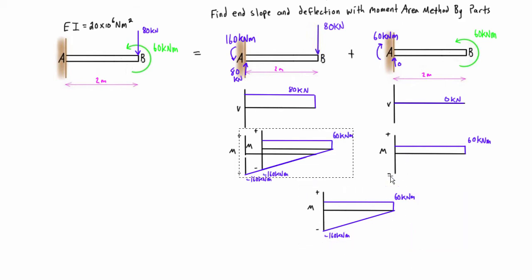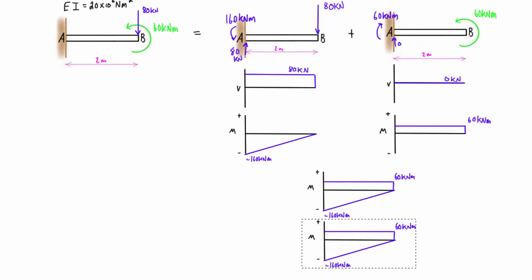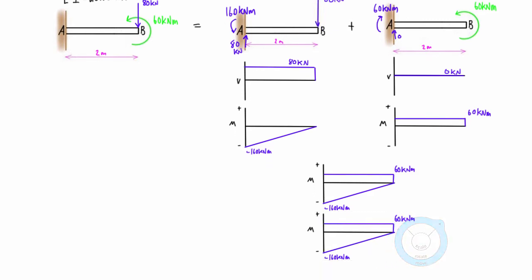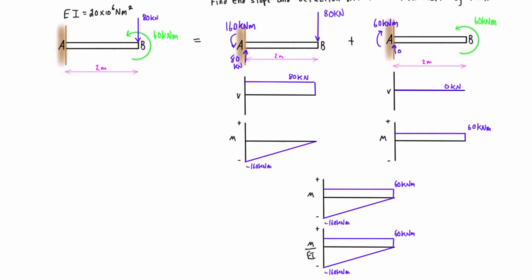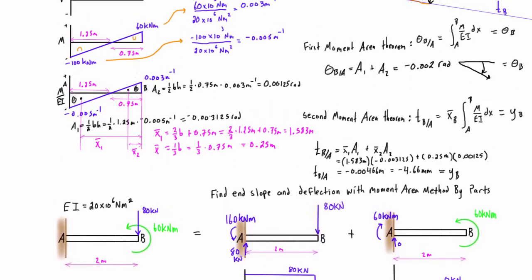Now what we want to do is take the bending moment diagram, make a copy of it, and we need to convert this to the M over EI diagram. We write M over EI here and we divide all of our critical values by EI, which was 20 times 10 to the 6 newton meters squared. So 60 kilonewton meters divided by that is 0.003 meters to the minus 1, and 160 divided by EI is negative 0.008 meters to the minus 1.